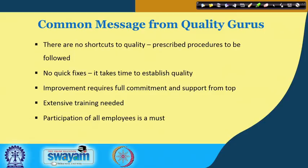No quick fixes — it takes time to establish quality. Your process might be at three sigma and you can set a realistic goal of 4.5 sigma, then subsequently once you reach that milestone you can further improve and set a new milestone of 5 sigma or 5.5 sigma. If people practice passion and patience in achieving this standard, they can realize the sustainable benefits of quality.